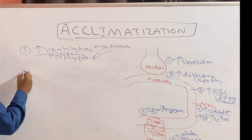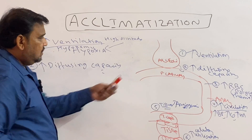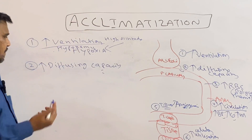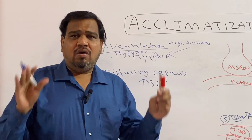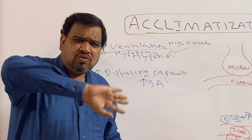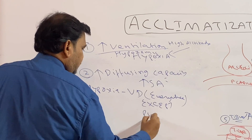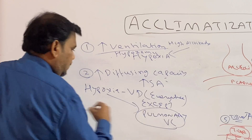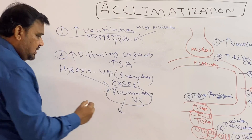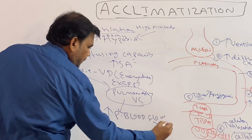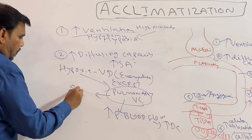Coming to the second point — increased diffusing capacity: more oxygen is diffusing from the alveoli into the capillary due to increased surface area. Another reason: hypoxia causes vasodilation in all blood vessels everywhere except the pulmonary vessels — in the pulmonary vasculature, hypoxia causes vasoconstriction. Because of this pulmonary vasoconstriction, there is increased pulmonary blood flow, which is the reason for increased diffusion capacity, along with the opening up of previously closed spaces.